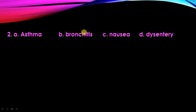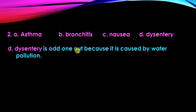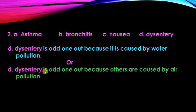Second set: A — asthma, B — bronchitis, C — nausea, D — dysentery. Asthma, bronchitis, and nausea are caused by air pollution. Dysentery is caused by water pollution. So dysentery is odd one out because it is caused by water pollution, or you can write: dysentery is odd one out because others — asthma, bronchitis, and nausea — are caused by air pollution.